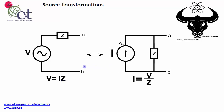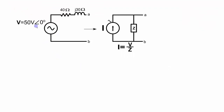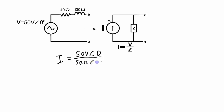I'd like to do a quick example. We have a 50-volt source in series with a 40-ohm resistor and a 30-ohm inductor. This transformation involves figuring out what the current will be, determined by taking the voltage and dividing by the total impedance. That current equals 50 volts at 0 degrees divided by 40 + j30 ohms, which in polar form is 50 ohms at 36.87 degrees.